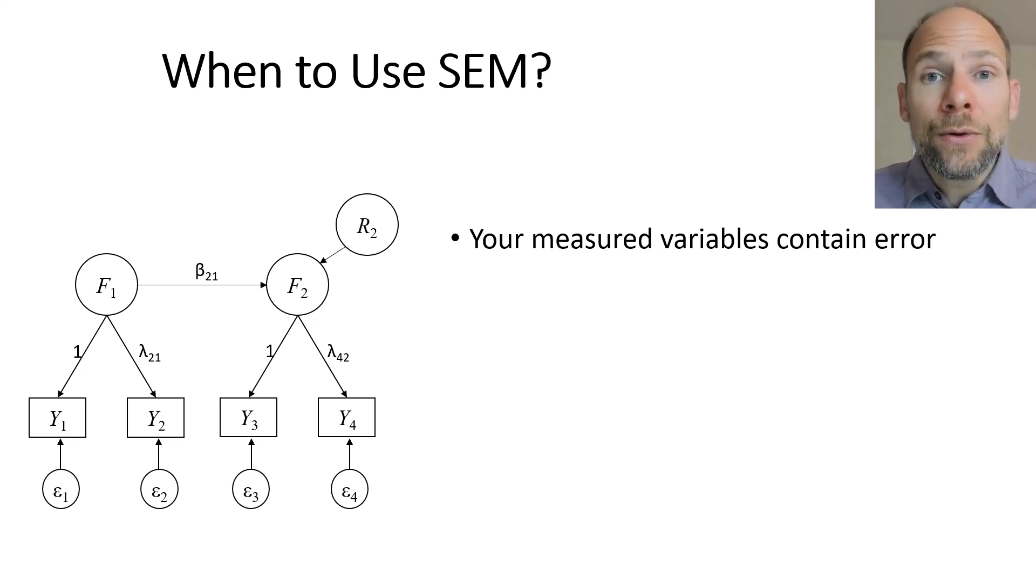Whenever you deal with questionnaire items, questionnaire scales or sum scores or test scores or ratings and you have to assume that those variables do contain some source of unreliable variance, measurement error variance as measured, for example, by Cronbach's alpha, which would be a reliability coefficient or other types of reliability indices derived from classical test theory. Whenever those reliability coefficients make you think that reliability is less than perfect, then it makes sense to potentially use a structural equation model to correct for measurement error.